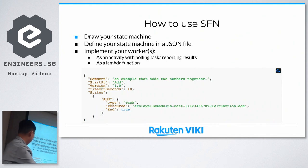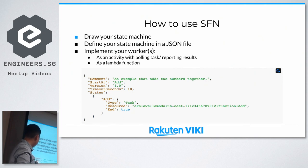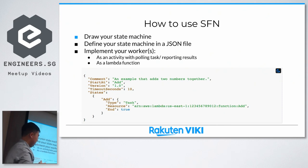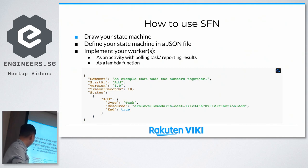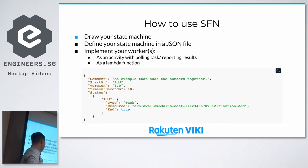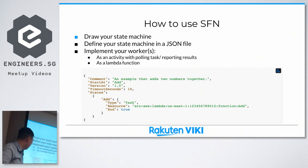Here is an example of a state machine JSON. You have 'StartAt' to indicate which state execution begins with. There's a timeout in seconds — 10 seconds means if your flow has not completed in 10 seconds, it will be marked as timed out. You have a list of states. For the S state, it's a task type, so you specify the resource that will do the work. 'End: true' means this is the final state of the state machine.